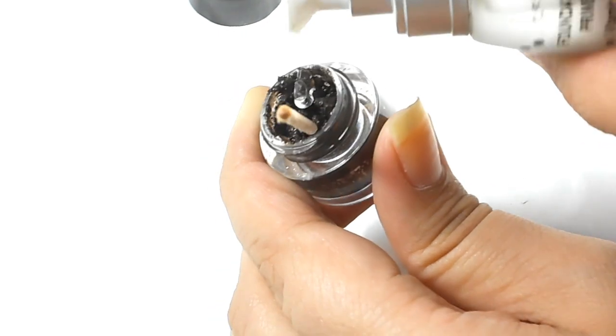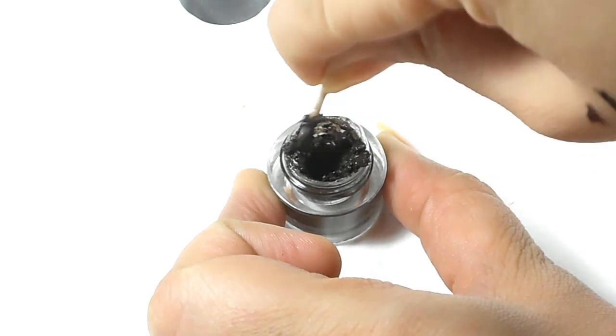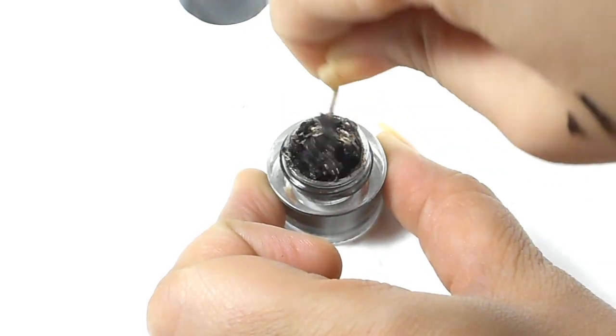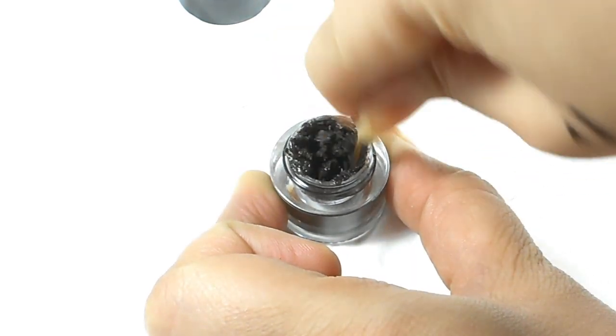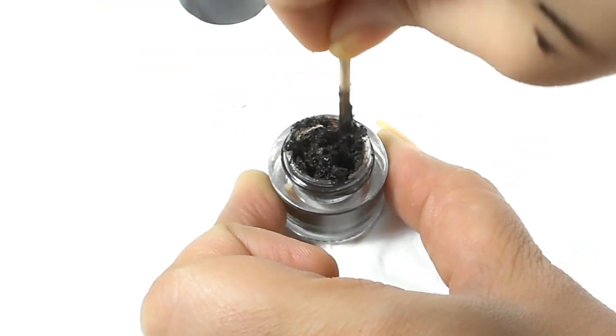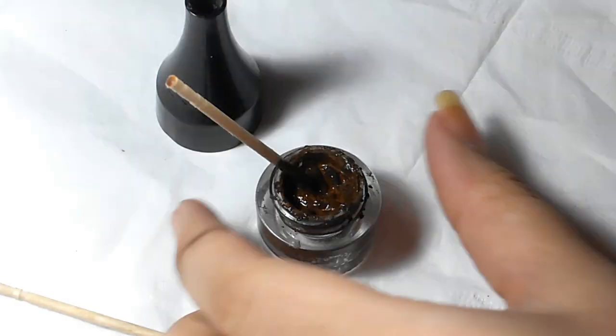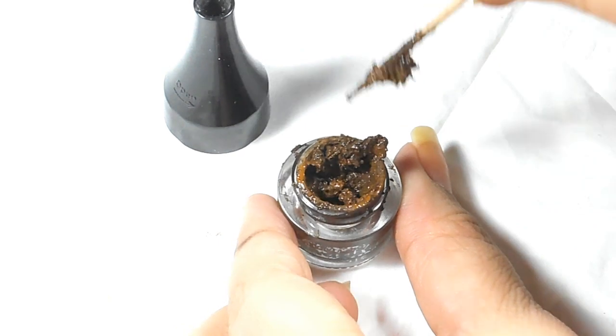Once you feel you have mixed everything well, you need to put it in the microwave for 10 seconds. So I just microwaved it for 10 seconds and you can see it has changed color. It is because of the ingredients that were already present in my gel eyeliner.